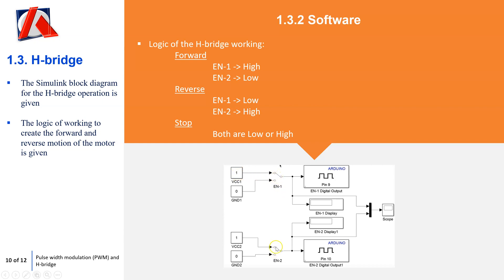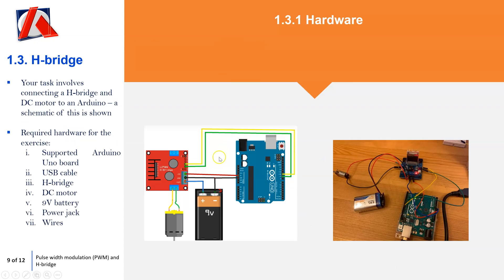The logic of the H-bridge works like this: to go forward, have EN1 high and EN2 low. For reverse, EN1 low and EN2 high. To stop, have both either high or low. If from pin 9 you're supplying 5 volts and pin 10 is at 0, that corresponds to power flowing one way through the motor. Swapping it — pin 9 at 0 volts and pin 10 at 5 volts — corresponds to supplying power the other way, switching the polarity.